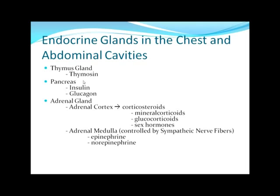The pancreas makes two hormones: insulin and glucagon, which counteract each other. Insulin is secreted when blood glucose levels are very high; it is the gatekeeper that causes all body cells to take up glucose. Glucagon, on the other hand, is activated when blood glucose is too low — it stimulates glycogen stores, found mainly in the liver, to be broken down. Since glycogen is a storage form of glucose, breaking it down releases glucose back into the blood.